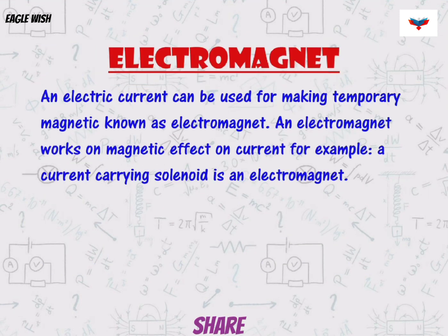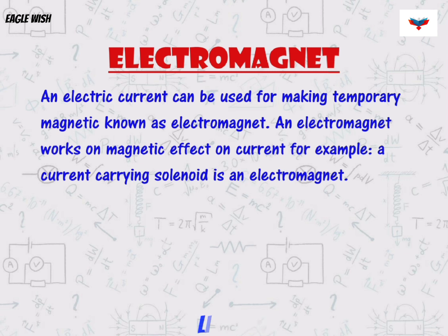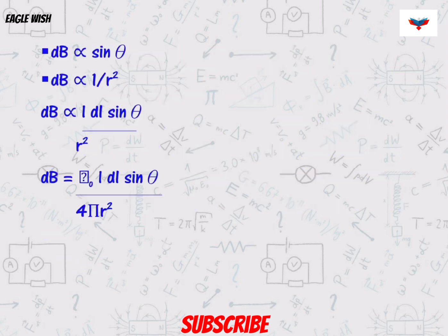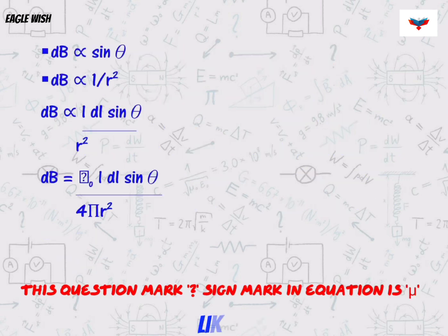After that we will write about electromagnet. An electromagnet is a type of magnet in which the magnetic field is produced by an electric current. Biot-Savart law is an equation describing the magnetic field generated by a constant electric current.